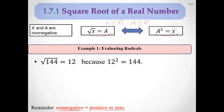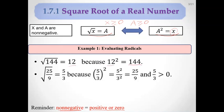For example, the square root of 144 is 12 because 12 squared is 144. The same applies to fractions: the square root of 225 over 9 is 5 over 3, because 5 over 3 squared equals 25 over 9. This value is also greater than 0.